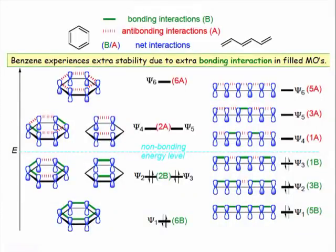In a previous webcast, we saw that the additional stability of cyclic benzene relative to linear hexatriene hinged on the extra bonding interaction in benzene's filled molecular orbitals.